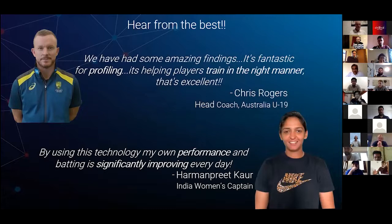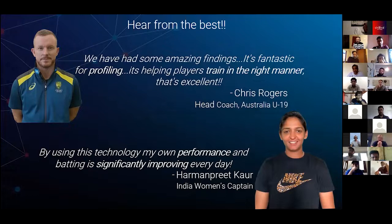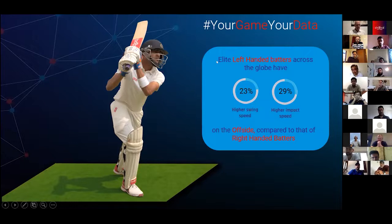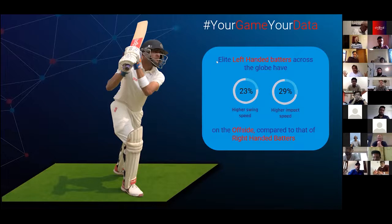We have data to tell you that left-handers, when they play in the off, have a swing speed 23% higher than right-handers, and impact speed 29% higher than right-handers. That's a fact across a good global sample of players. We all know left-handers are flamboyant on the off, but now we have data to prove that bat swing and impact speed in the off is much greater than that of right-handers.